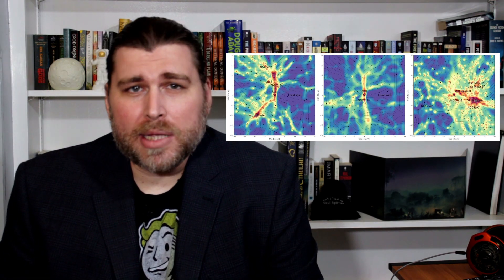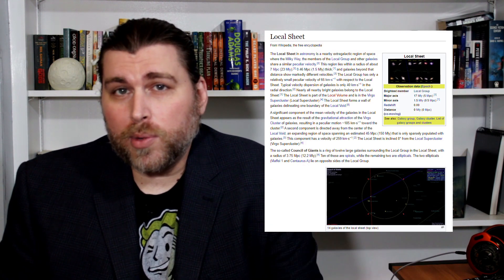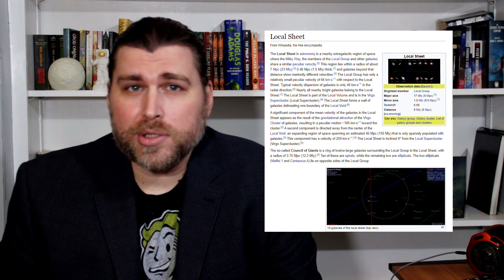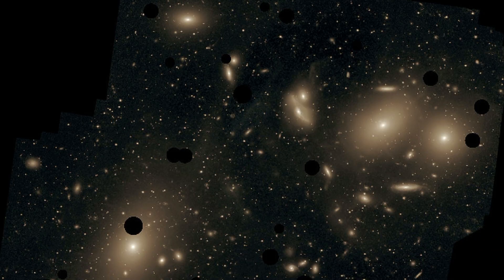The map was also able to reproduce the formation of well-known structures observed in the local universe, including the local sheet — the area of space where the Milky Way and neighboring galaxies reside — as well as galaxies in the Virgo cluster and the local void. In addition, the deep learning simulation also identified new filamentary structures that bridge the gaps between galaxies.